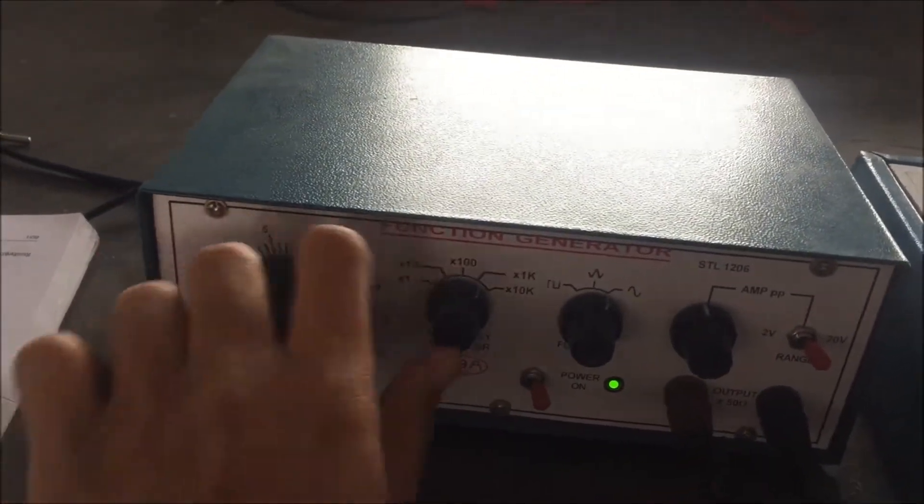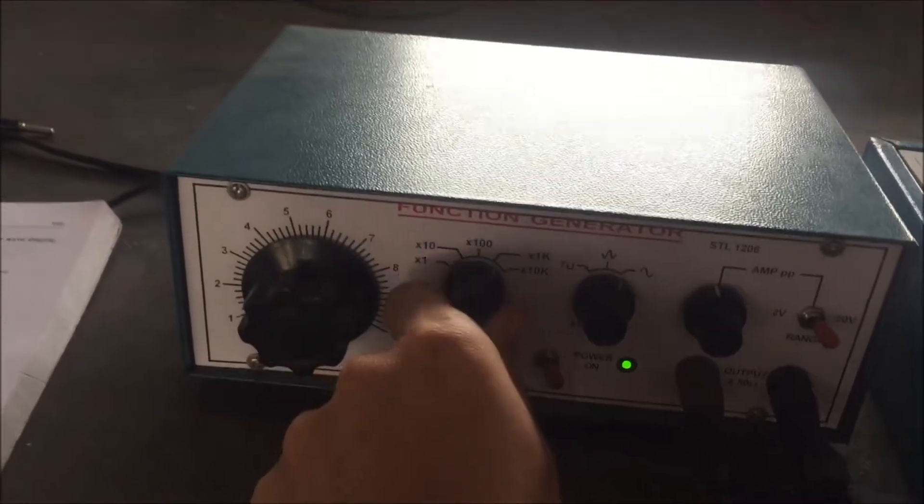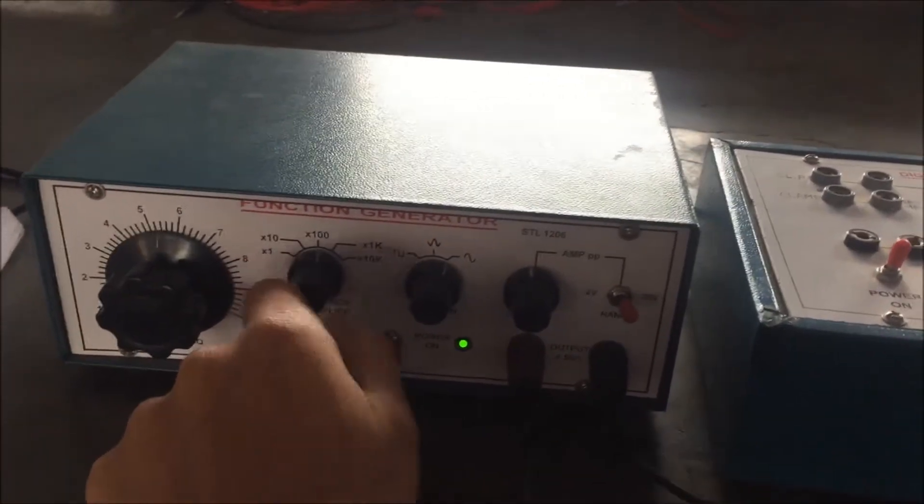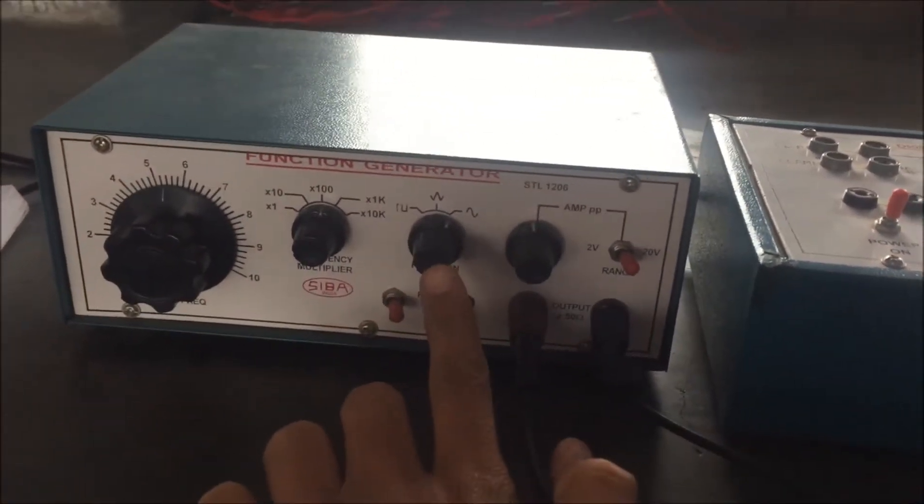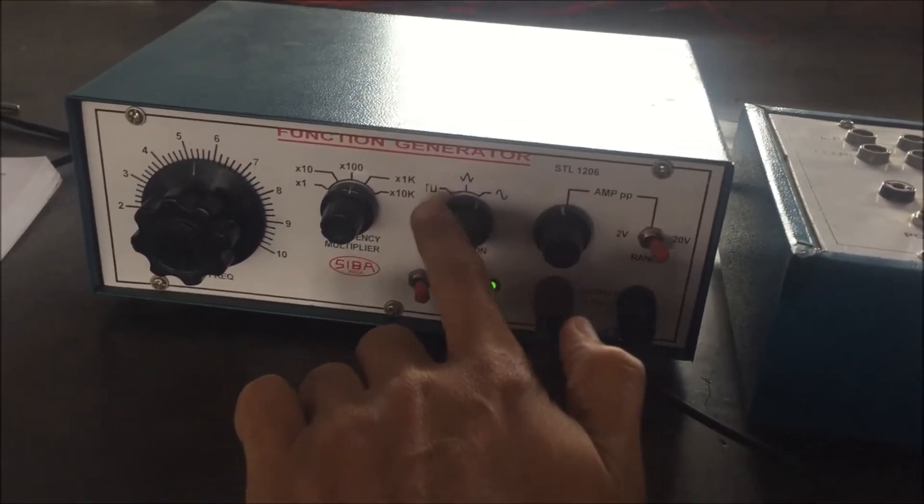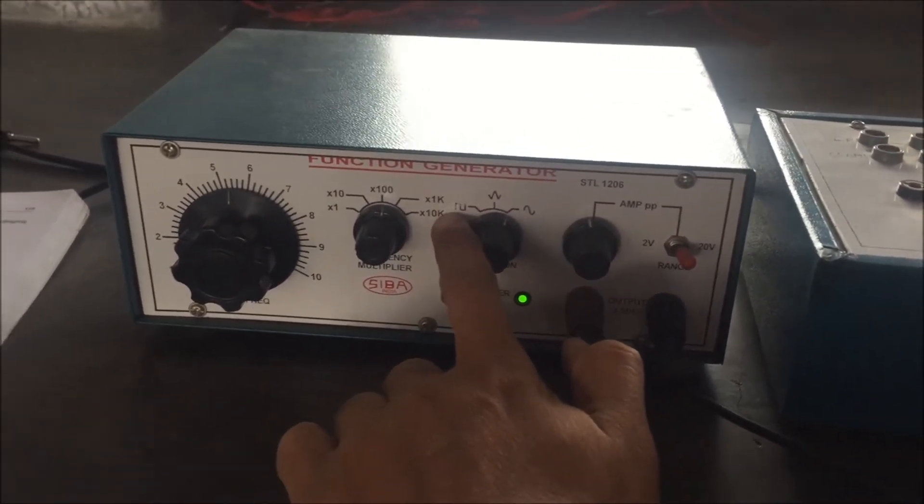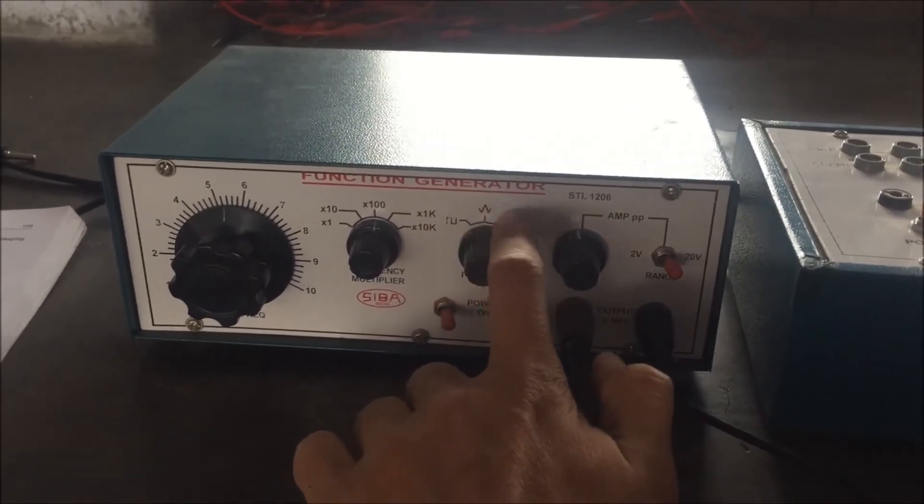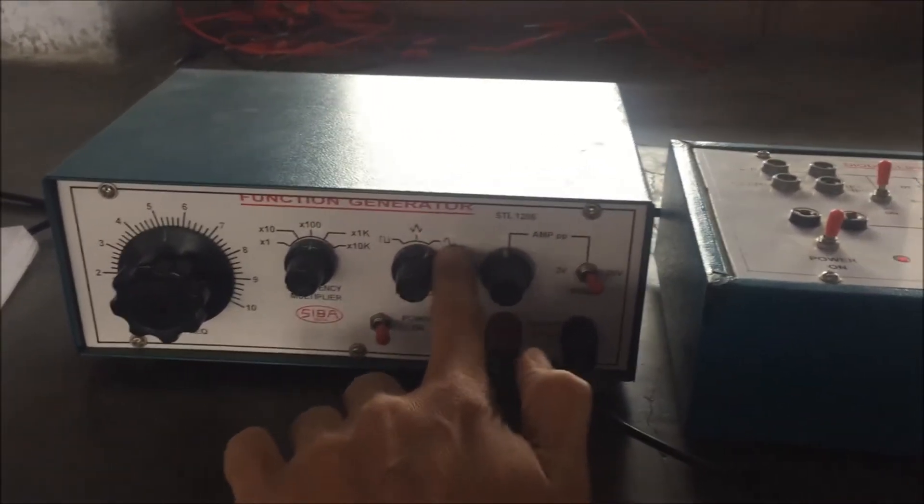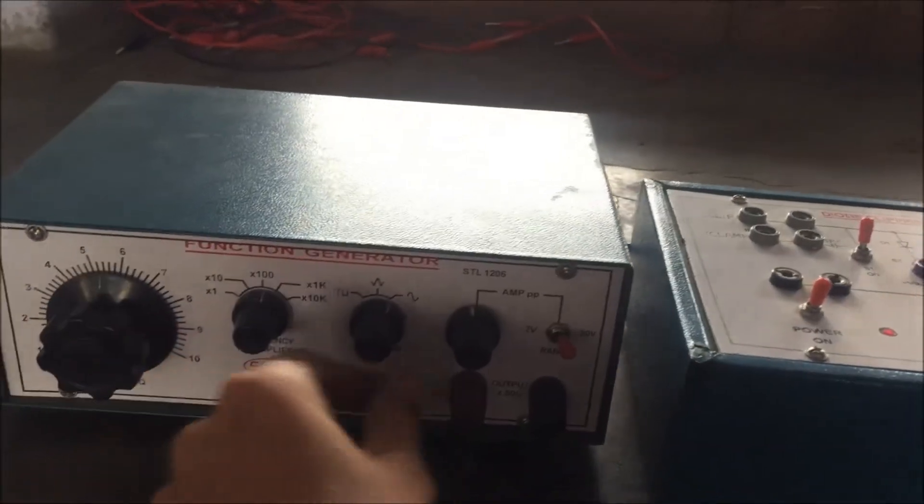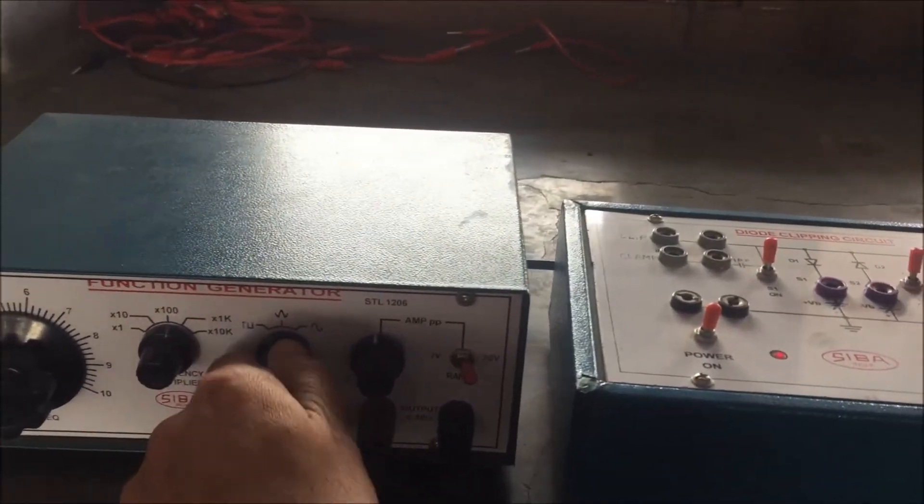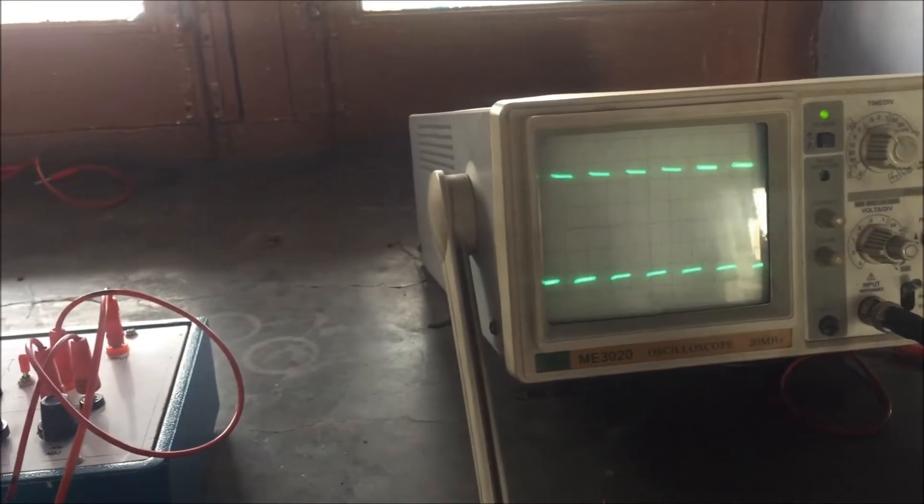So in this way you can choose any value of frequency as you require. And the other thing is the waveform. So here, there are 3 types of waveforms: this is square, triangular, and sine wave. So this is the sine wave. Now I will choose the other waveform, triangular, so this is triangular waveform. And then third is square. So this is the square waveform.